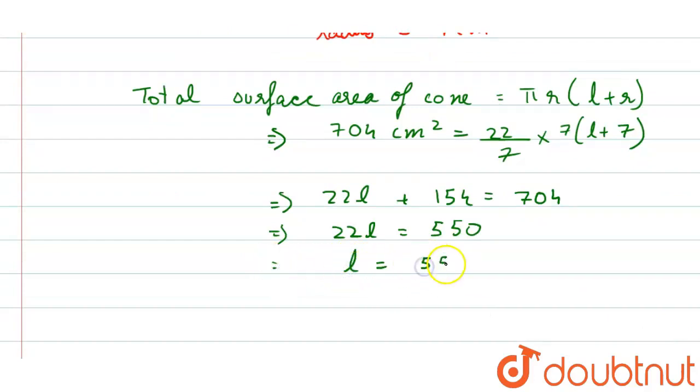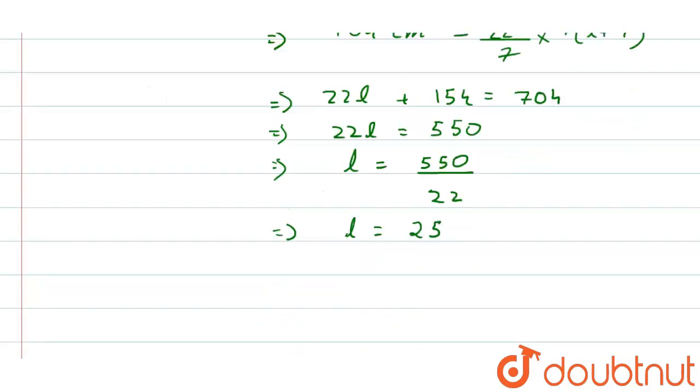Now we have l equals to 550 by 22, that is equals to 25. So we have slant height as 25 centimeter. So this will be the answer for this question. Thank you.